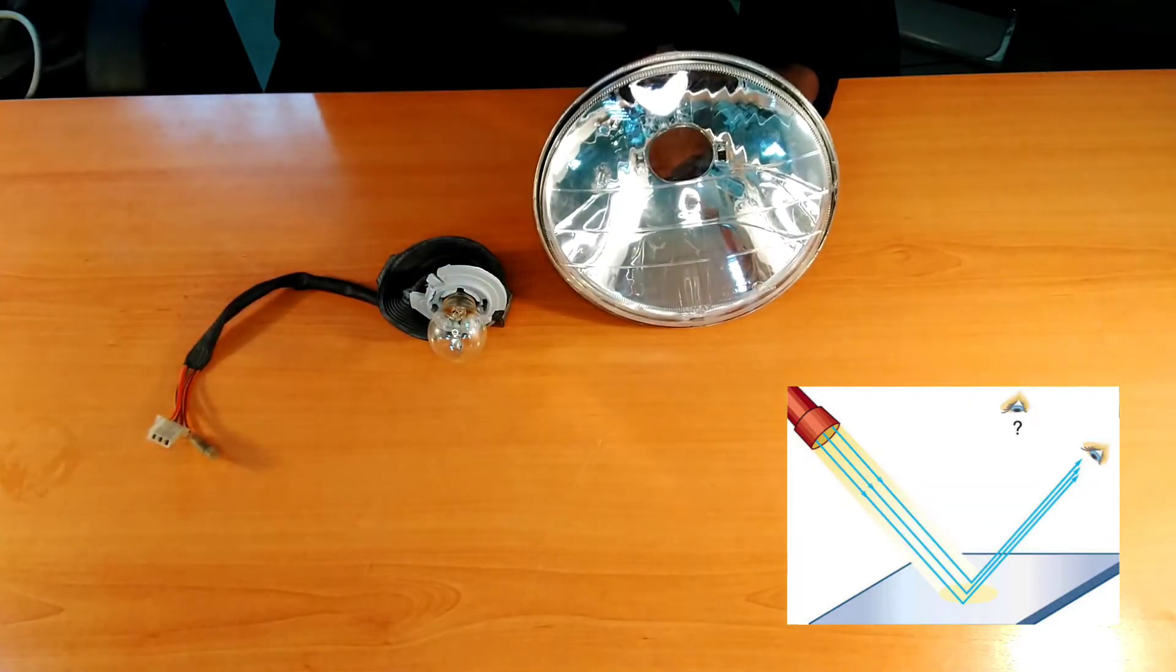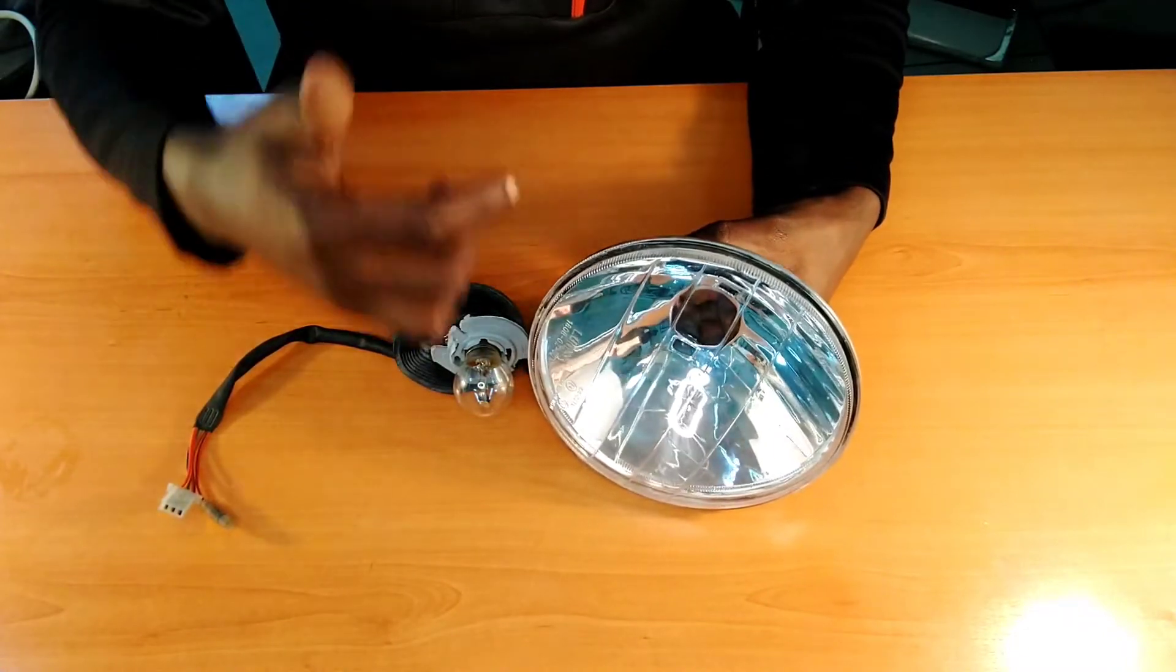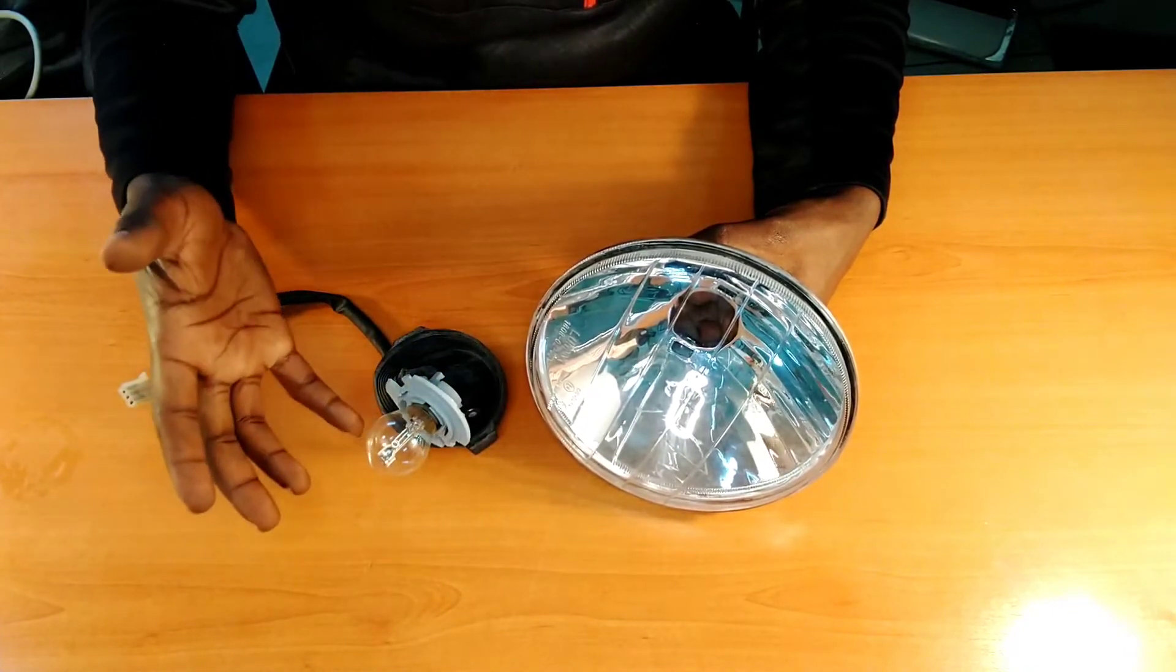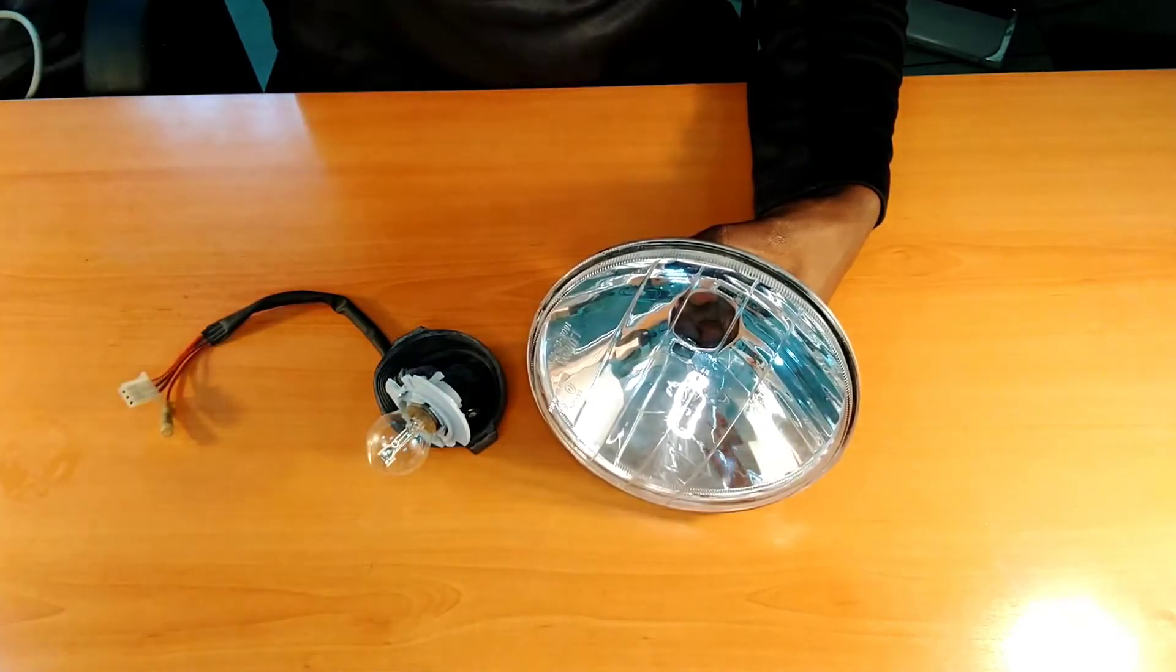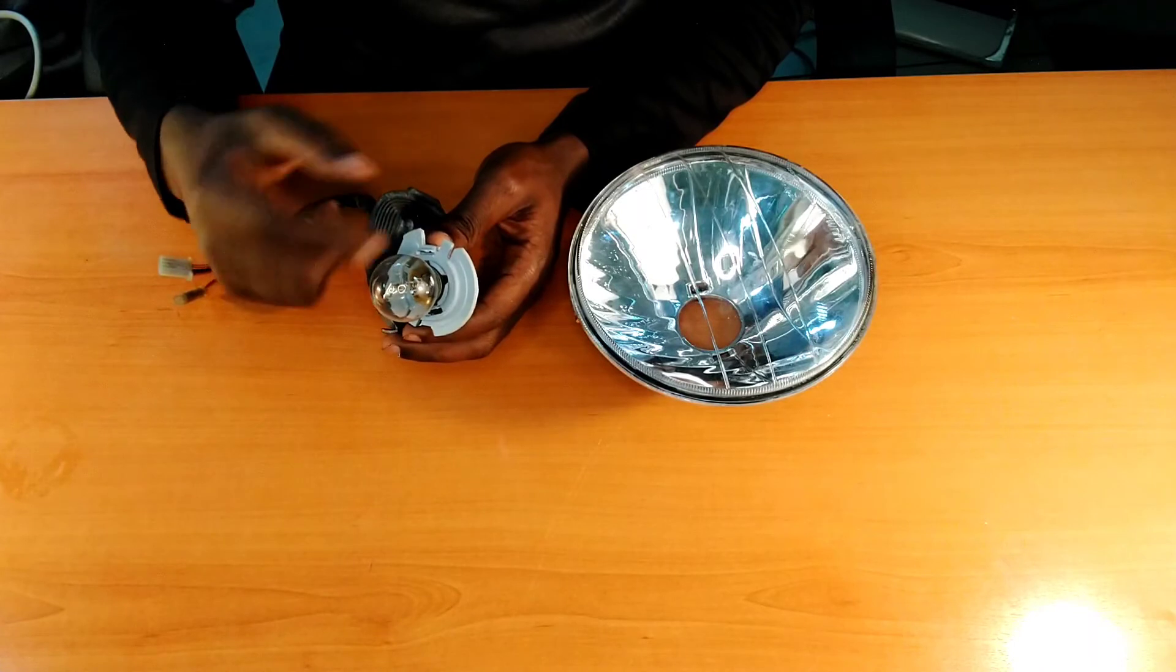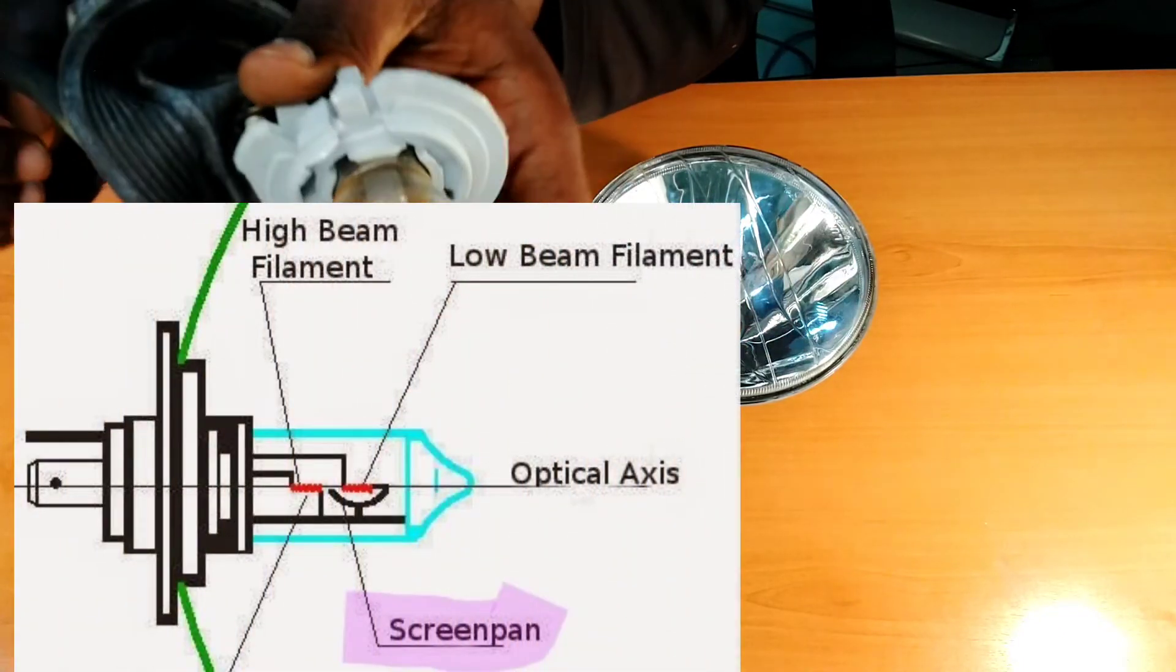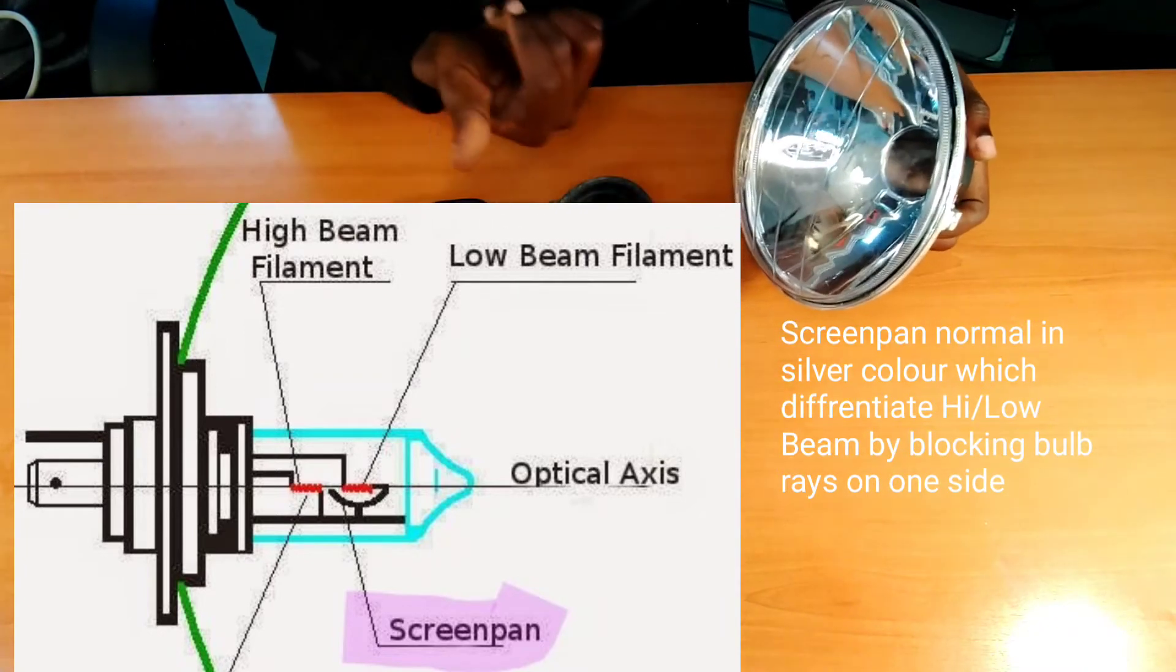Now how do we achieve a high and low beam while using a bulb which is having the same wattage? Because the low beam is 35 watts and the high beam is also 35 watts. Differentiating between high and low beam depends on this structure which you are seeing here inside.